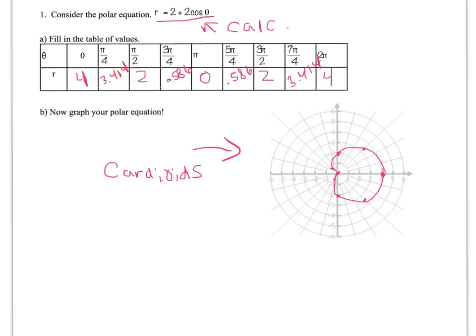I think the mathematical term for them is this, lima-son or lima-con. To be honest, I don't know, I don't find the pronunciation of that too interesting. I call them cardioids, but they're also called lima-son.